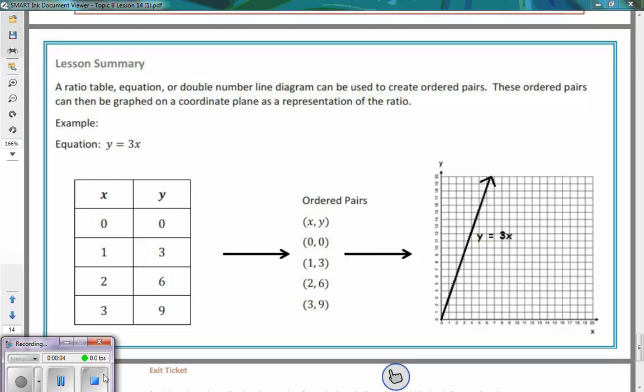Alright everybody, today in class I've got a quick summary. We took a ratio table, found an equation from the ratio table, built double number lines, and used a ratio table and double number lines to create ordered pairs that we then graphed on a coordinate plane.